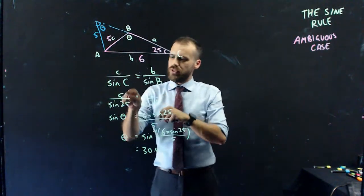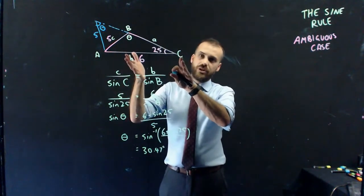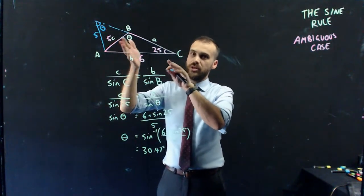So all of the things that I put into my sine rule, 5, 25 and 6, they exist in the pink triangle, and they also exist in the blue triangle.